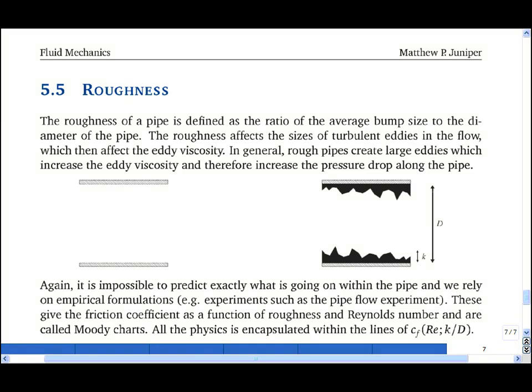The roughness of the walls of the pipe affects the size of turbulent eddies in the flow. In a smooth-walled pipe, the eddies are weak, but in a rough-walled pipe, the eddies are strong, and that means there is increased eddy viscosity and therefore an increased pressure drop down the pipe.